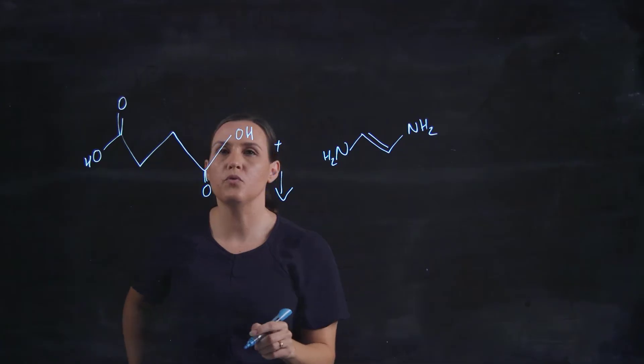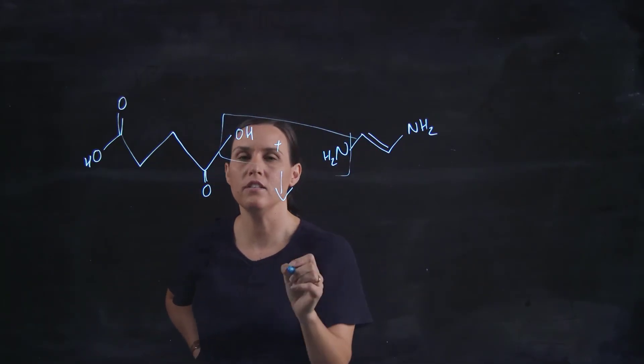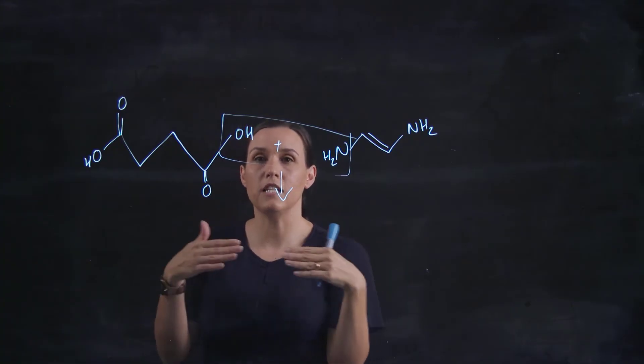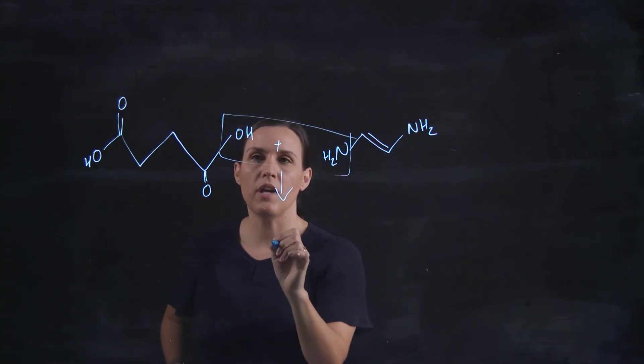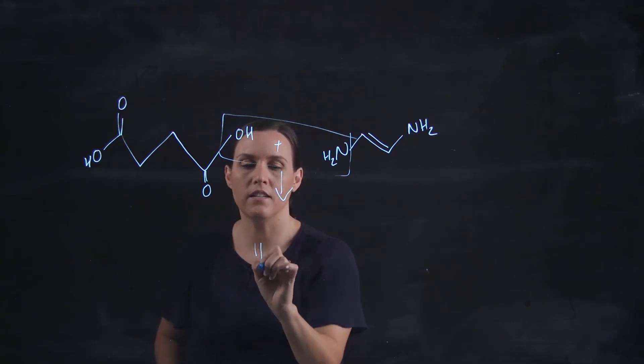So the way that we would draw this is we would draw that condensation reaction occurring to make that linkage between the two. So when we have a carboxylic acid and an amine, we get an amide that's formed.